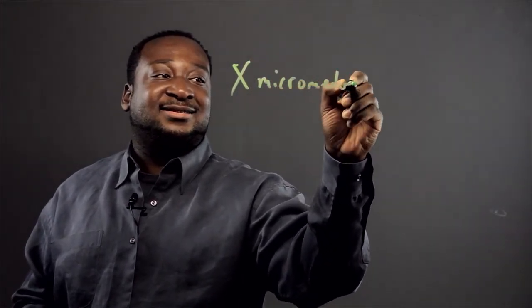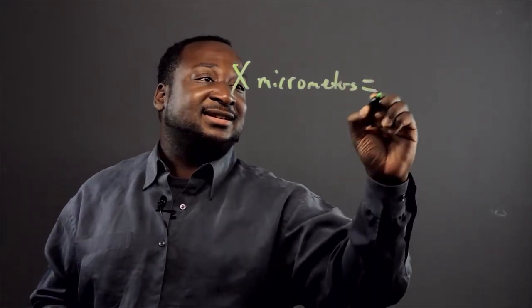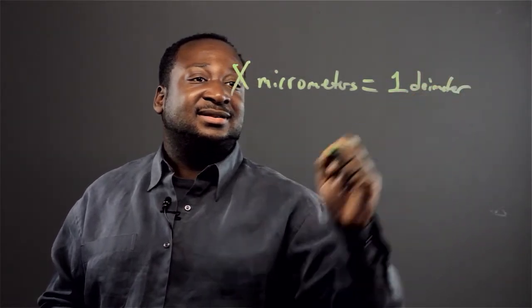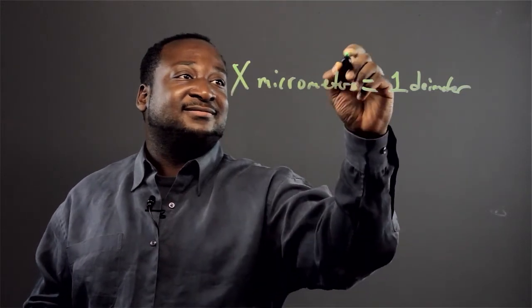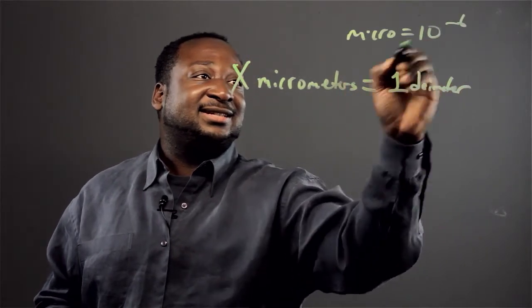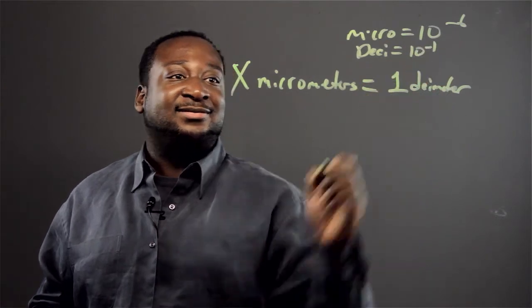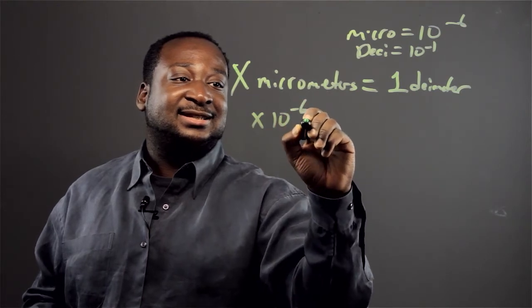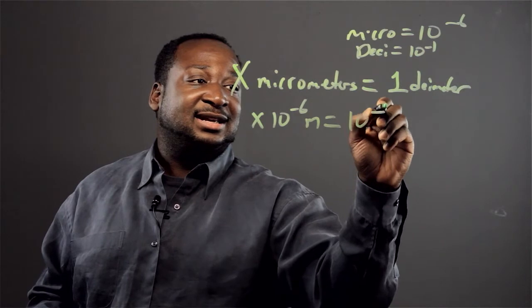Hi, my name is Stefan. Today I'm going to be speaking on how many micrometers are in a decimeter. So we have: how many X micrometers equals one decimeter? Micro equals 10 to the negative 6, deci equals 10 to the negative 1. So X times 10 to the negative 6 meters equals 10 to the negative 1 meters.